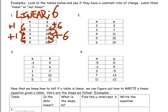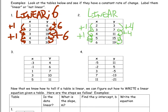Number two. What is our change in Y here? Four — we're up four. Change in X? One. We can see that the change in X is always going to be one. Is this change four? Yes. This change, is it four? Yes. This one? Yes. So this one is linear with a slope of four.